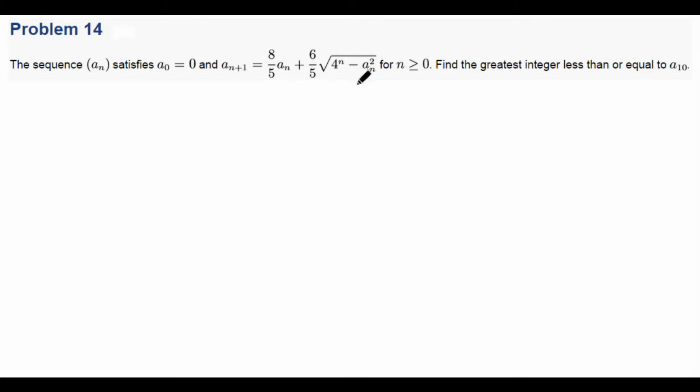So the key observation here is if we can factor out a 4^n, then that'd be nice. So why don't we try to do that? If we factor it out, then we get this part is 2^n times the square root of 1 minus (A_n/2^n)^2. So this we can simplify a little bit more as 2^n times the square root of 1 minus (A_n/2^n) squared.